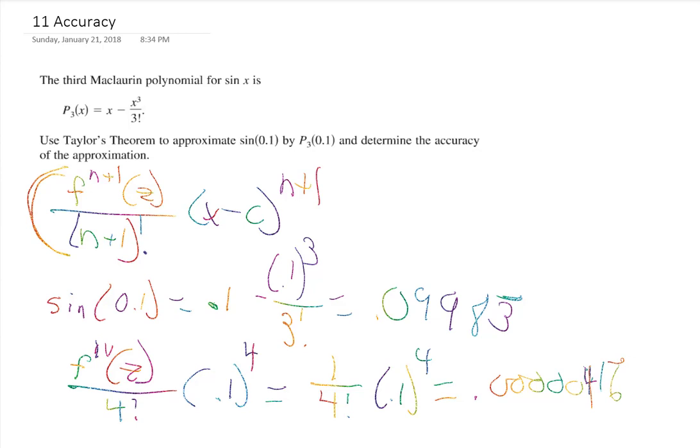Our answer is off by at most that many decimal places — accurate to 5 places: 0.099833. So it could be as large as 0.099834 or as small as 0.099833. We know the error is somewhere in there, which in manufacturing is an extremely accurate answer. And we calculated that just by plugging 0.1 in for x — relatively easy calculations.